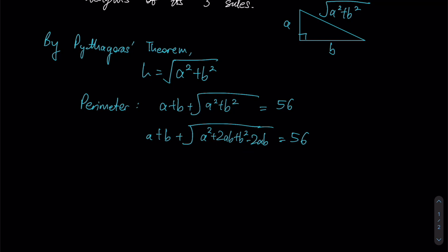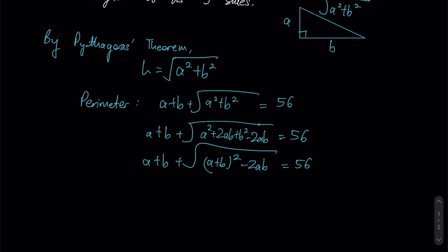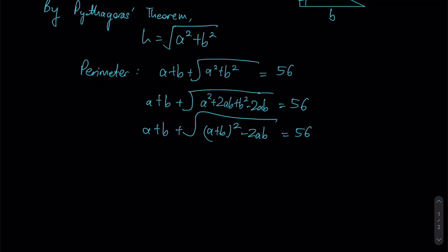And now this is of a form that we can factorize, because that is just A plus B squared. And then we will leave the 2AB outside for now, and we'll figure out a way to deal with this 2AB in just a bit.